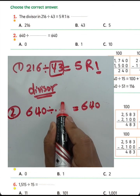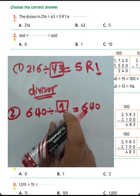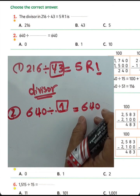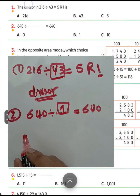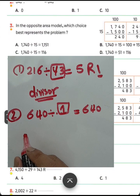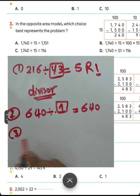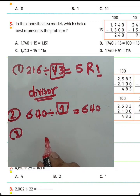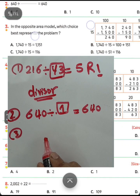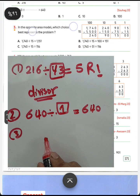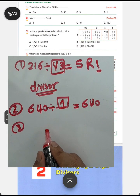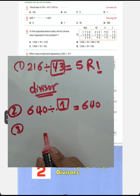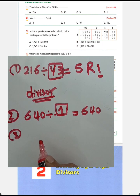Question number 2: 640 divided by blank equals 640. Any number divided by 1 will be the same number. Question number 3: in the area model, which one best represents the problem?